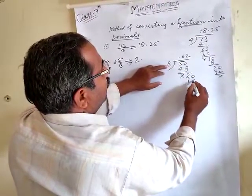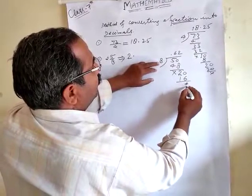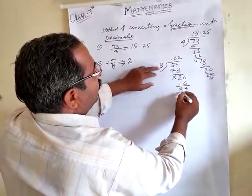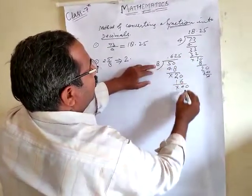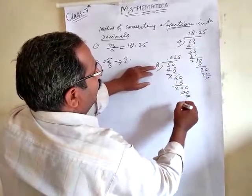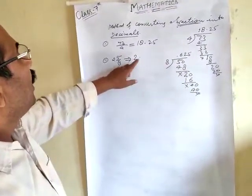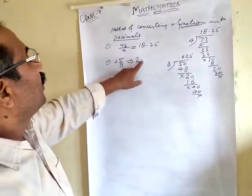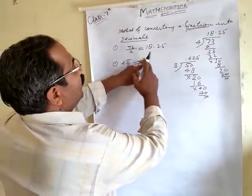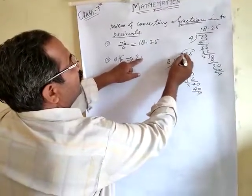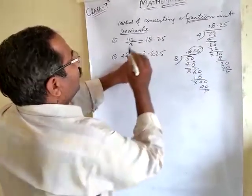8 twos are 16. 10 minus 6 is 4. 1 minus 1 is nothing. 8 fives are 40, so it is divisible by 8. You have already placed the decimal point, so no need to write it again. You will write the digits 6, 2, 5, giving the answer 0.625.